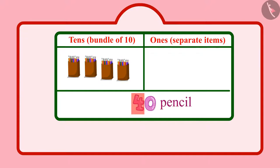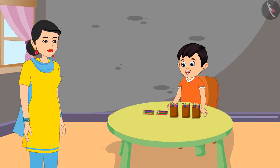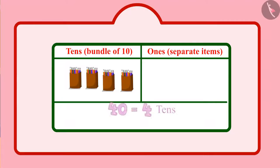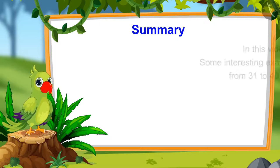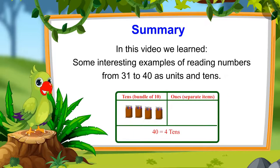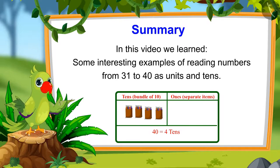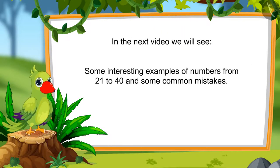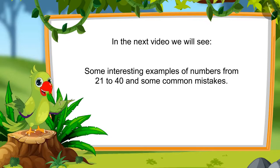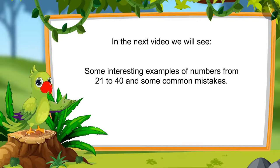Chotu's mother asked about units. Chotu said: 'Mummy, there are no units in 40.' His mother confirmed: 'Yes, Chotu, there are only 4 tens in 40 and 0 units.' So children, that was all for today. In this video, we saw numbers from 21 to 40 and some interesting examples of reading those numbers as units and tens. In the next video, we will see some interesting examples of numbers from 21 to 40 and learn about common mistakes which should not be done. Goodbye, friends.